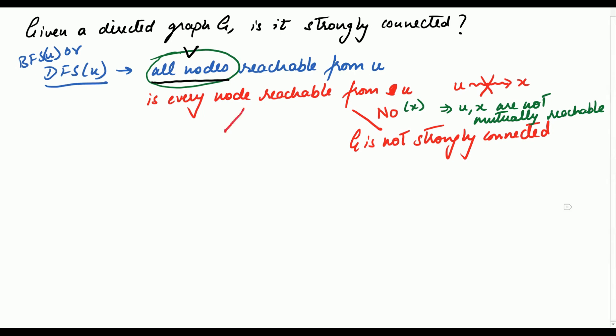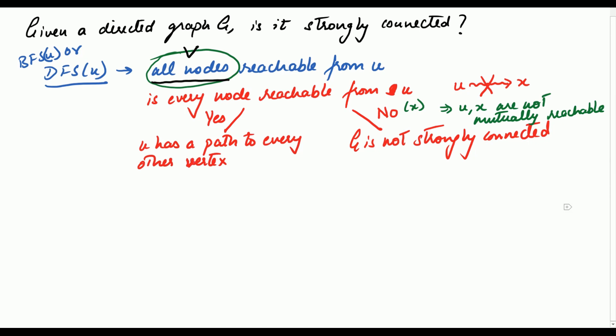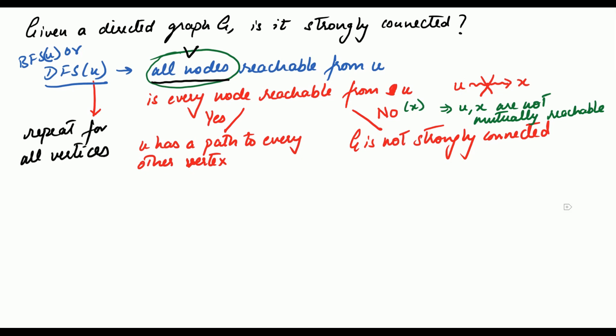Now, what if the answer to this question is yes? This simply means that U has a path to every other vertex, but does that answer your question completely? In order for the graph to be strongly connected, just observing that every node is reachable from U does not suffice. So what you can do is repeat this procedure for all the vertices in the graph. If there is even one vertex whose DFS tree does not include the entire vertex set, then you can conclude the graph is not strongly connected.